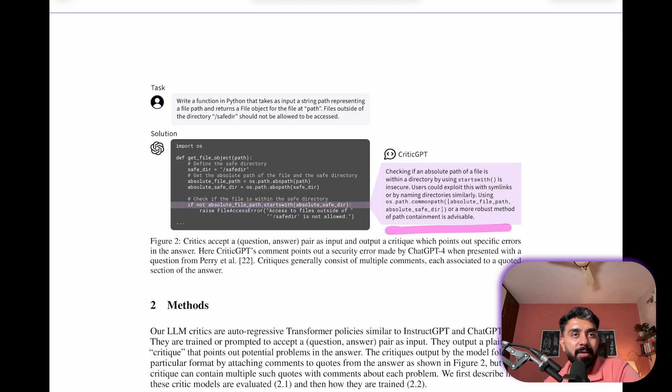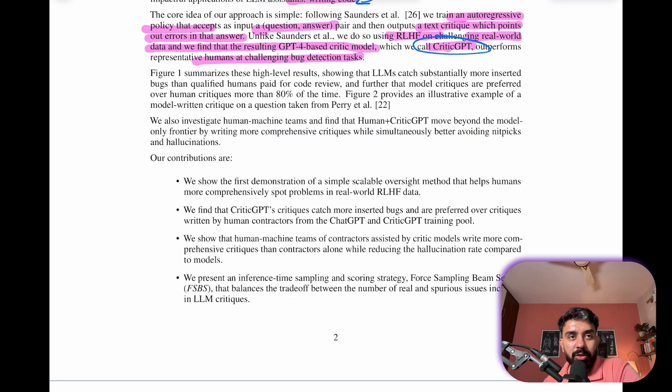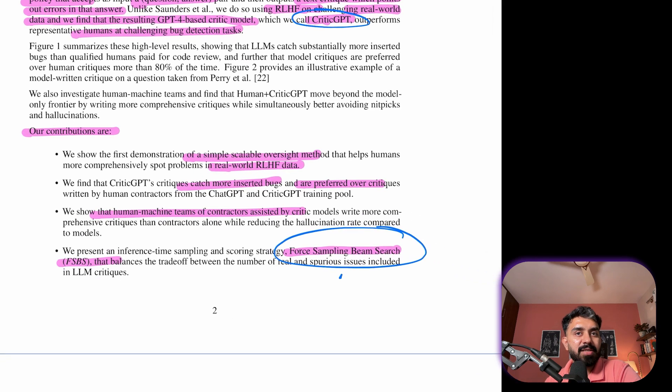The contribution of this research basically includes demonstrating a scalable oversight method for real world RLHF data, which showcases CriticGPT's superior bug detection and critique preference, and then highlights the effectiveness of human-machine teams. And further, it introduces a technique called Force Sampling Beam Search, FSBS, to balance real and spurious issues in critiques, which we'll see in a bit.